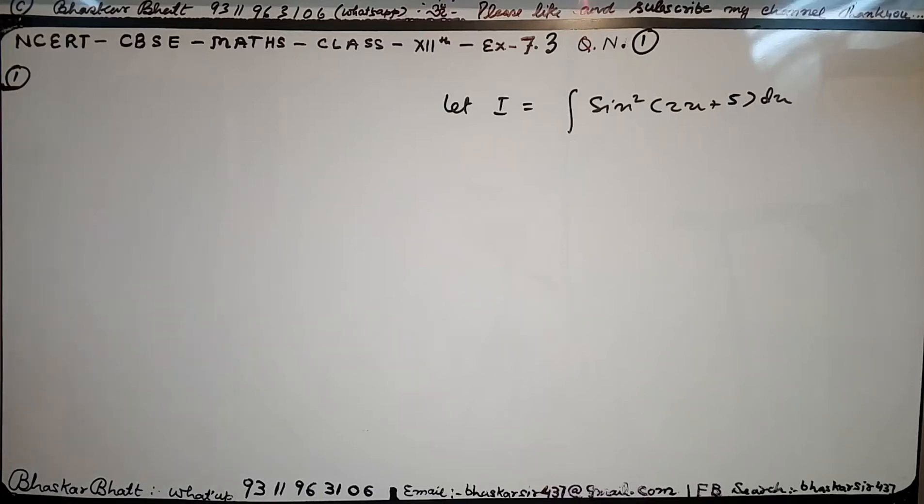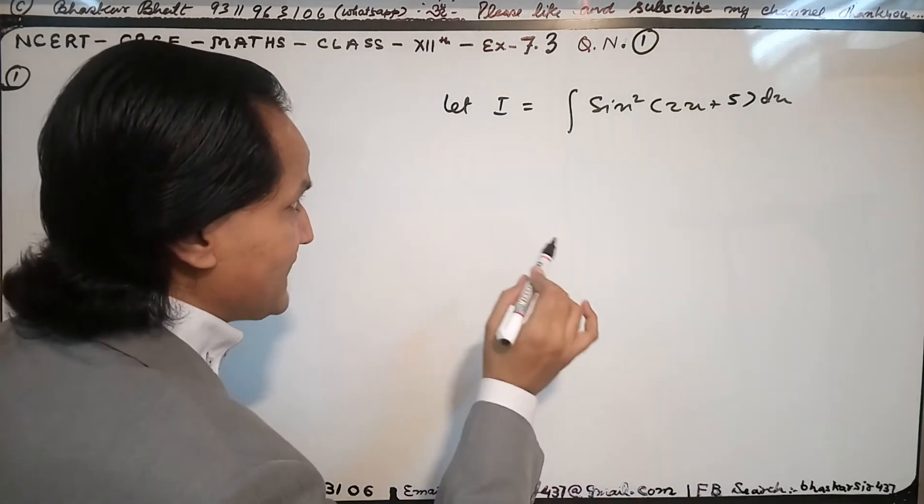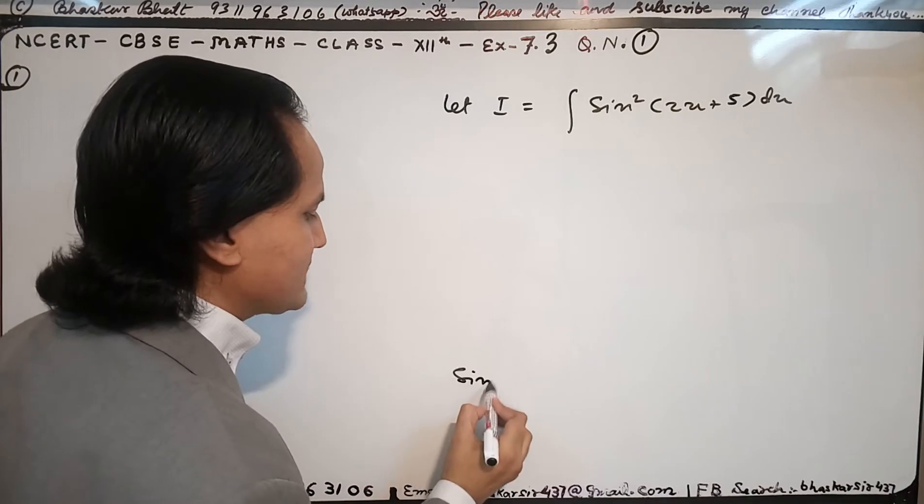Now we have the first question of exercise 7.3. Very simple question: we have sine square (2x + 5). You know we have two basic formulas. Sine square x